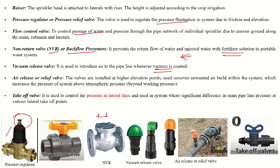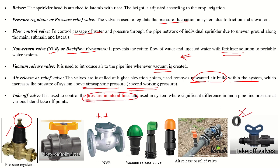The air release or relief valve is installed at higher elevation points to remove unwanted air bubbles from the system, which helps increase system pressure above atmospheric pressure to the working pressure. The take-off valve is used to control the pressure in the lateral line.